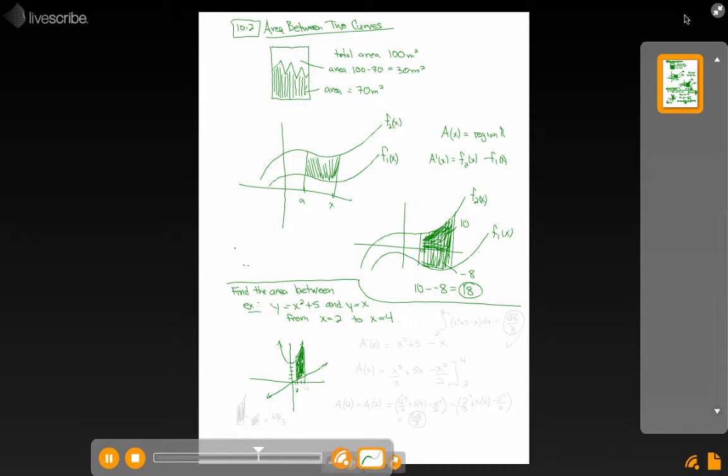And we're wondering about from 2 to 4, a region something like that. So it is important that I see that one function is above the other for that entire interval. Otherwise, I'd have to break this into two little questions, as I'll do in a later example. But once I see that, I can say that, okay, well